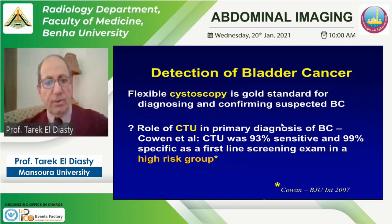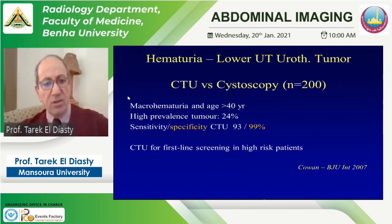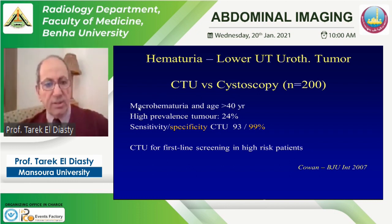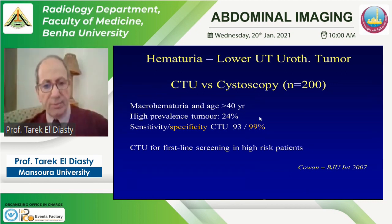For detection of bladder cancer, flexible cystoscopy is the gold standard for diagnosing and confirming suspected bladder carcinoma. There is research supporting CT urography as a primary tool to diagnose bladder cancer in the high-risk group — patients with macrohematuria (gross, not microscopic hematuria) over 40 years of age. In these patients, the prevalence of tumors is around 25%, and the sensitivity and specificity of CT urography are comparable to cystoscopy.